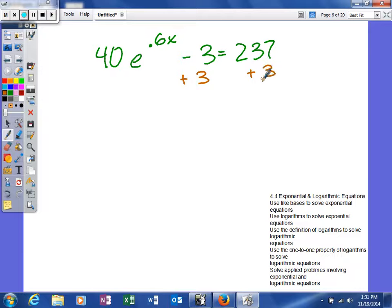So I'm going to add 3 to both sides and that will give me 40 times e to the .6x power. And over here I'll get 240. My next step is to divide by 40.